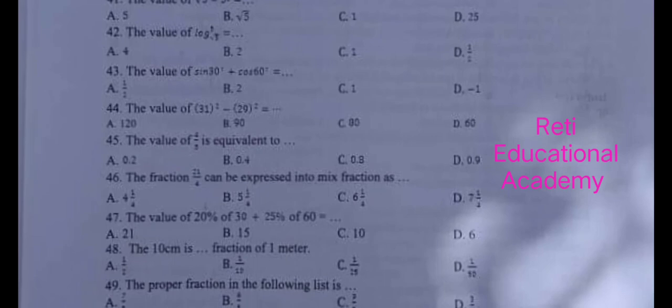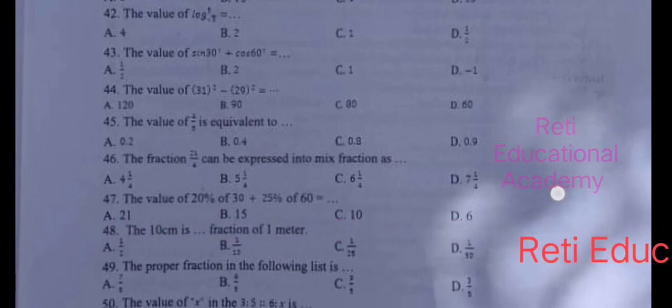Question number 44: The value of 31 square minus 29 square is. All the questions came from grade 8 book. The correct answer is A, 120. Question number 45,